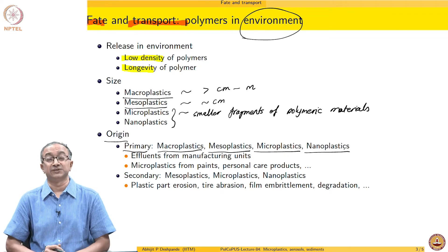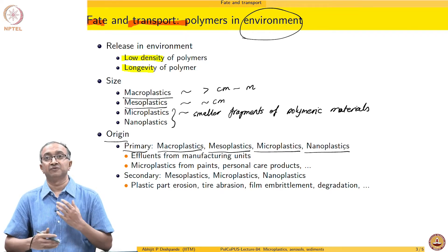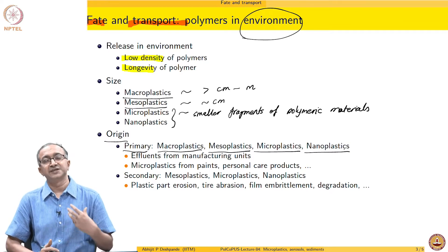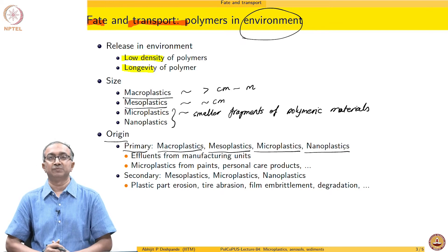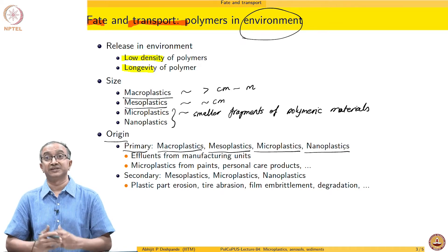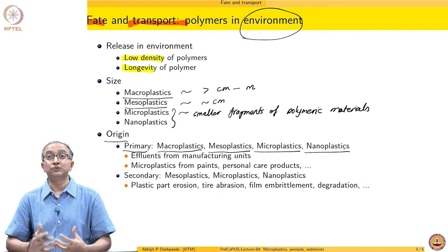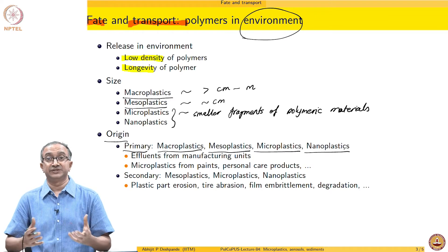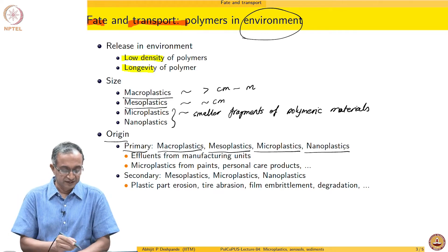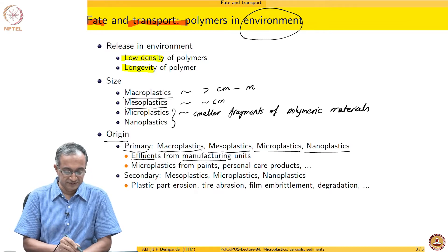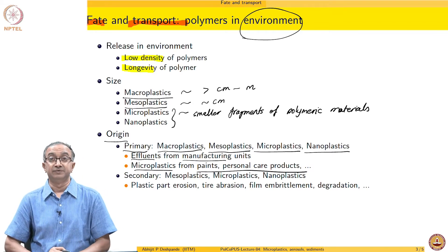Similarly, nanoplastics also enter as primary sources. In the last 10–15 years, given our interest in manipulating materials at the nanometer scale, there has been a lot of interest in getting particles of nanometer size and using them in several materials, including polymeric materials, for properties enhancement. By design, we generate a set of nanoparticles and include them in our polymeric material of interest. Naturally, when this gets into the waste stream, these nanometer-size particles are directly entering the atmosphere. So each of these are primary sources — effluents from manufacturing units or particles by design put into products.